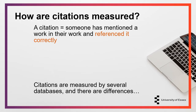In basic terms, a citation is an acknowledgement of your research being mentioned or used in another person's work. For you to receive that citation, the other person needs to have referenced your work correctly. These individual citations are often grouped, for example, by individual researcher, institution, or subject area, and then measured as an indicator of the research reach.